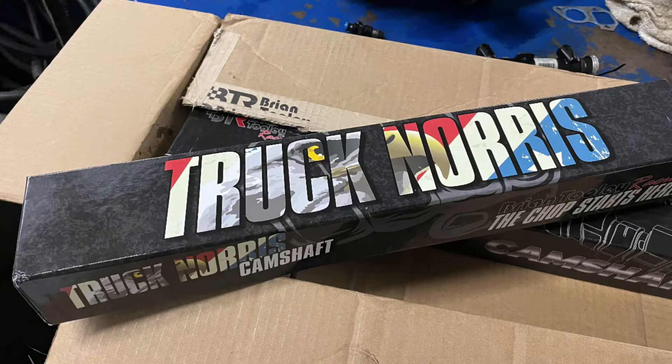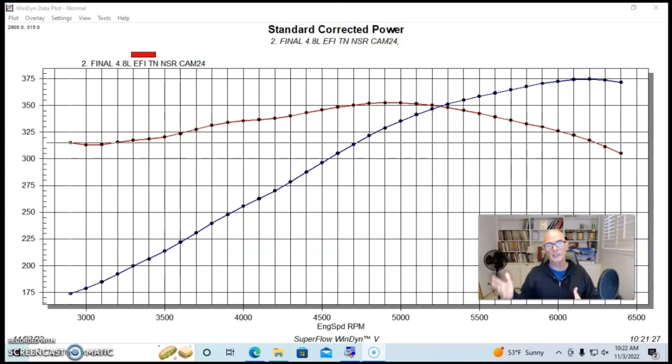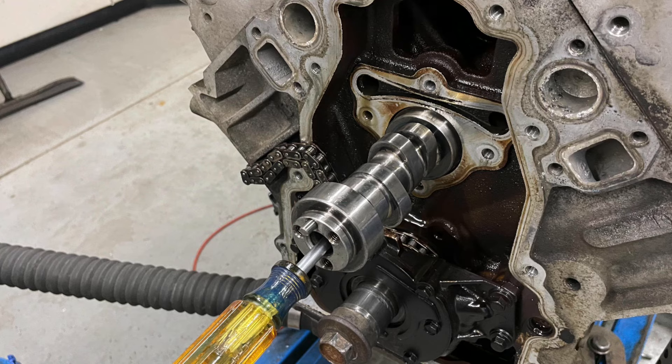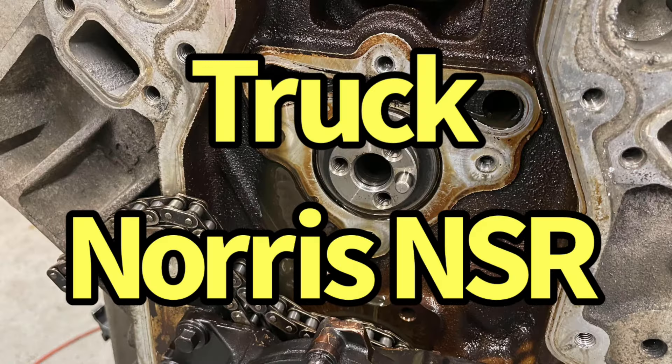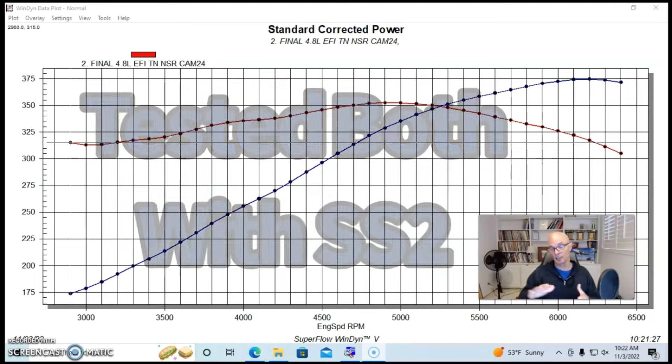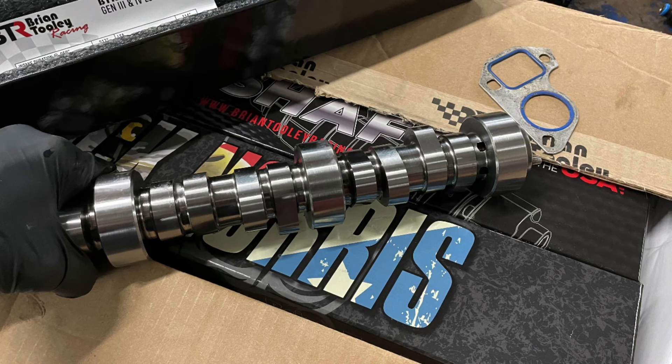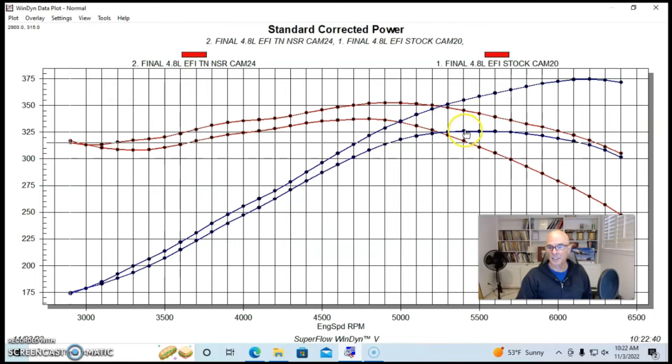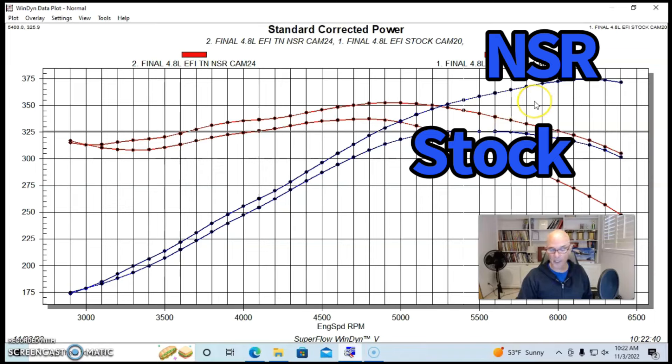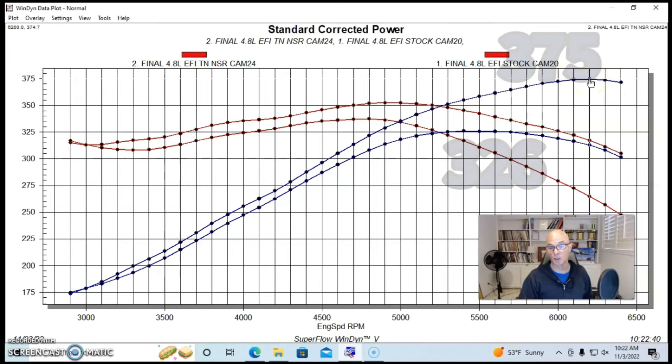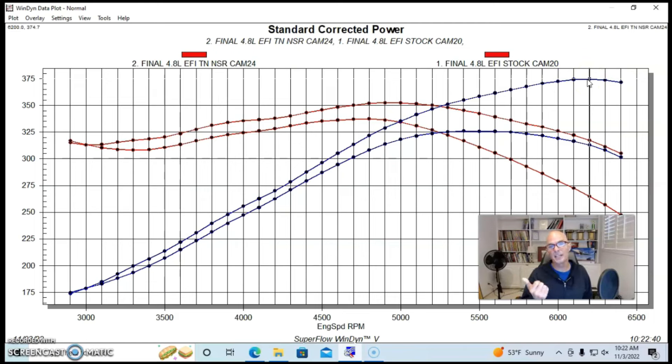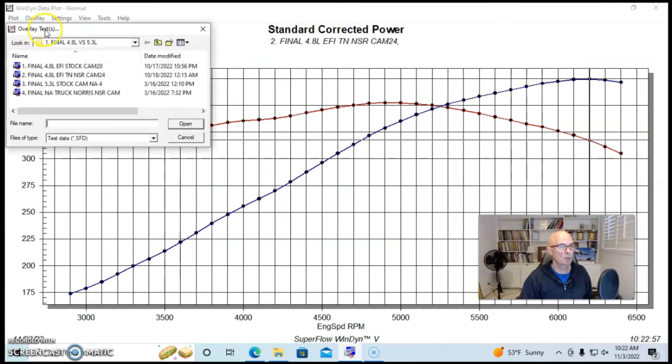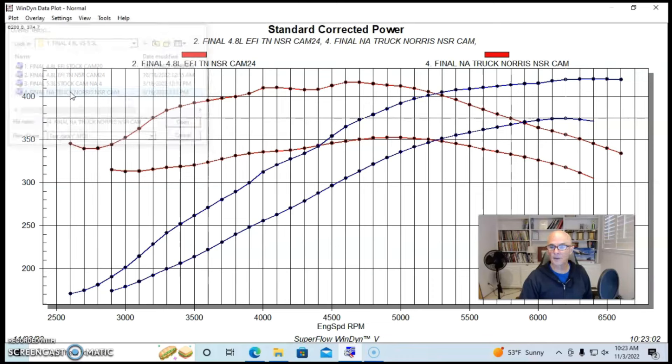Now that we take a look at a comparison between the 4.8 and the slightly larger 5.3 liter in stock trim, let's see what happens when we added camshafts to both of these. In this case we ran the Brian Tooley Racing Truck Norris NSR cam on both of them. I also ran both of these with a Sloppy Stage 2. We saw almost identical changes in power between the two with the slightly bigger Sloppy Stage 2 cam. On the Truck Norris NSR cam, I'll give you an idea on how much it gained. This is the 4.8 liter. We went from 326 horsepower to 375 horsepower on the 4.8 liter, which represented a gain of 49 horsepower.